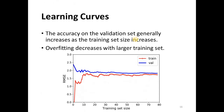Now, regarding learning curves: the accuracy on the validation set generally increases as the training set size increases. In this example, we have a variable training set size and the RMSE error, and we notice that as the training set size increases, the error on the validation set generally decreases — lower is better. Usually when you increase the training set size, you will get better validation error.